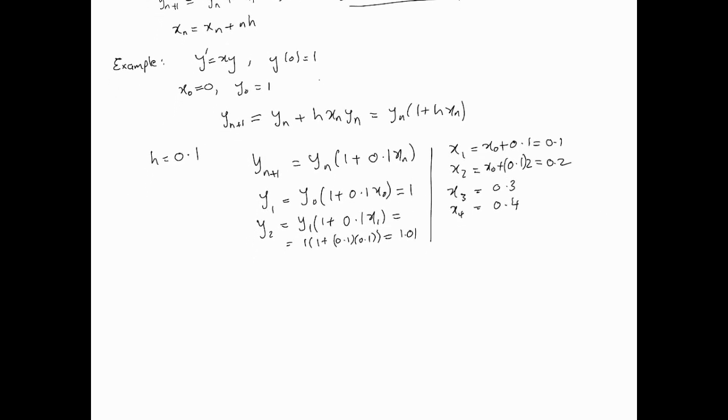Let's move further in this example. y3 is going to be y2 times (1 + 0.1*x2). y2 we've calculated is 1.01 into (1 + 0.1 times 0.2), which works out to be 1.0302. Similarly, y4 turns out to be 1.0302 times (1 + 0.1 into 0.3), which works out to be 1.061106.